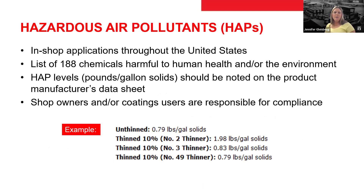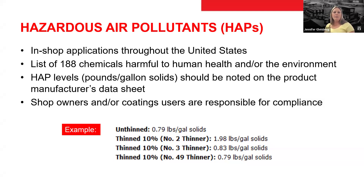Hazardous air pollutants are in-shop applications throughout the United States. There is a list of 188 chemicals that are harmful to human health and/or the environment. From a paint and coating manufacturer standpoint, we list the HAPs level on our product data sheet in pounds per gallon solid. The shop owners and/or coating users are responsible for compliance — the manufacturer is only responsible for listing that HAP amount on their product data sheet. At the shop level, they're the ones who have to total up that amount to make sure they're in compliance.